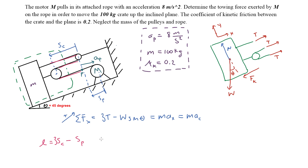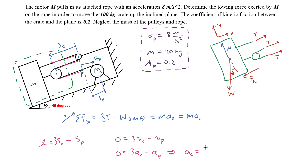Taking the first time derivative: since the rope length L is constant, its derivative is zero, giving 3 times the velocity of the crate minus the velocity of point P equals zero. Taking the second derivative: 3 times the acceleration of the crate minus the acceleration of point P equals zero. Therefore the acceleration of the crate equals one-third of the acceleration of point P.